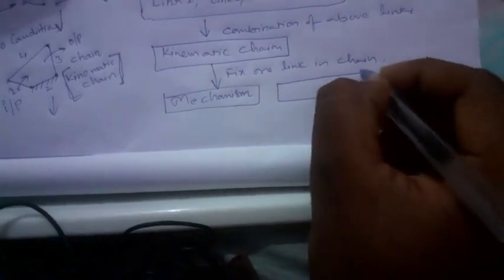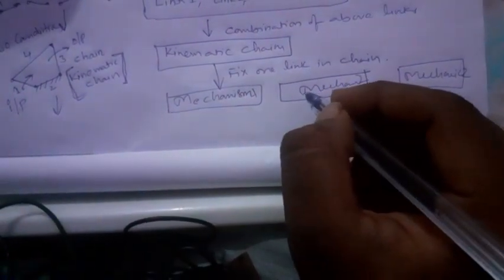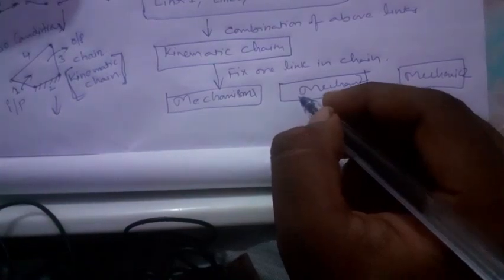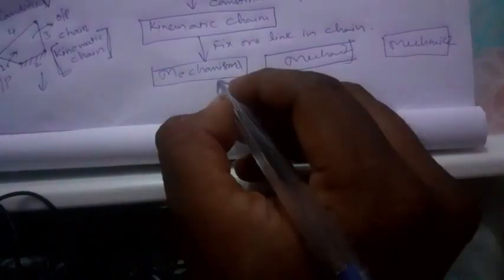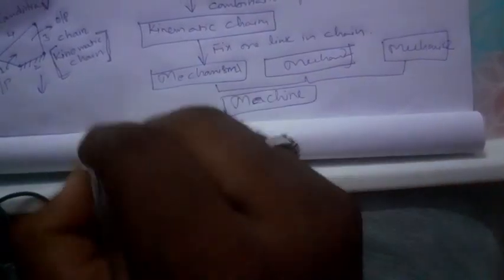Likewise you will create a number of mechanisms — mechanism 1, mechanism 2, mechanism 3, and so on. A machine can consist of one or more than one mechanism. By combining all these mechanisms you will form a machine.